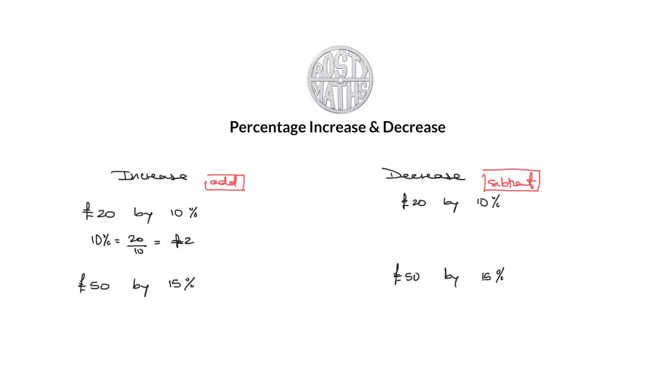So that's £2. Therefore to increase £20 by 10%, we take the £20, we add the £2 to it, and that answer is going to be £22.